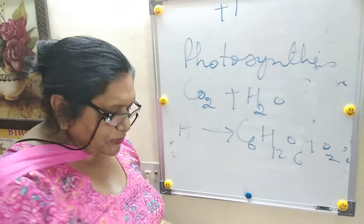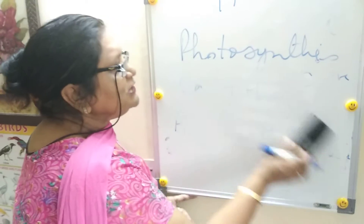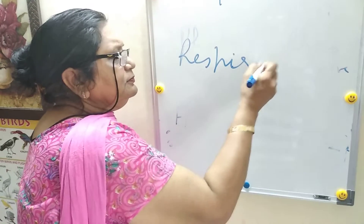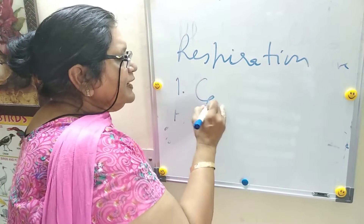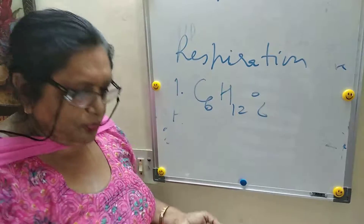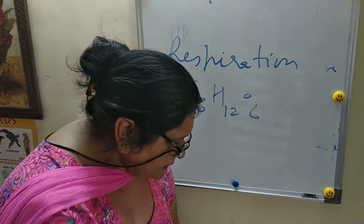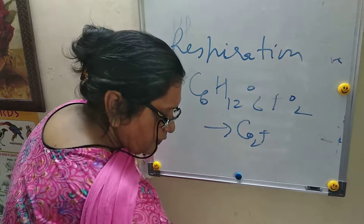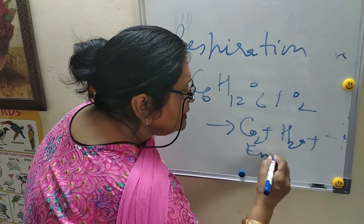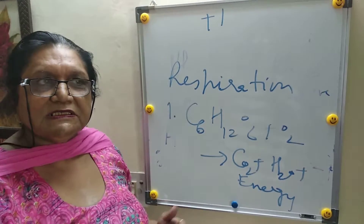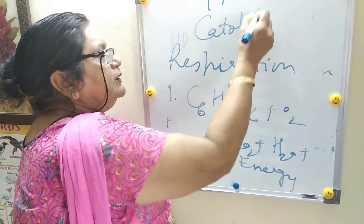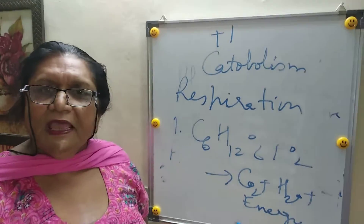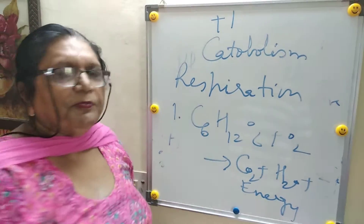When you reverse the photosynthesis equation, that equation is for respiration — another very important process of living beings. Respiration involves the breakdown of complex C6H12O6; they need oxygen for this reaction, and the products are CO2, water, and energy. This breakdown is also called a destructive process, which is catabolism. So for living beings, metabolism — both anabolism and catabolism — is a very important process.